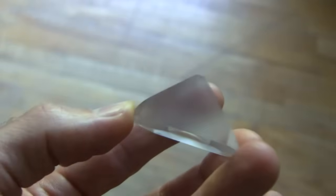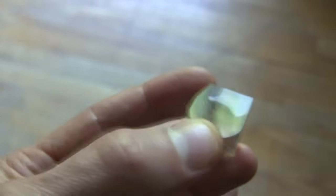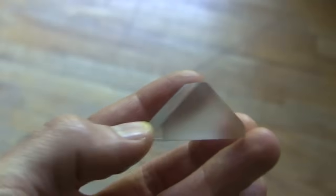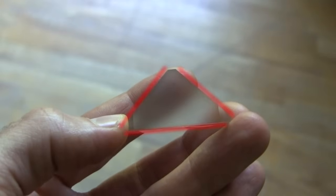I bought this prism at a local store called Focus Scientific that sells telescope and other optical equipment. It's a simple five-sided piece of glass with three sides forming a triangle.